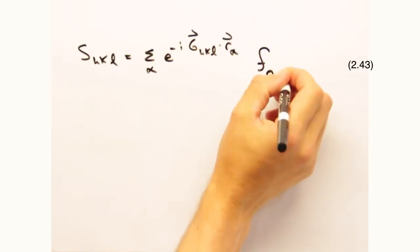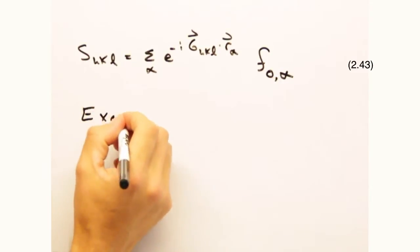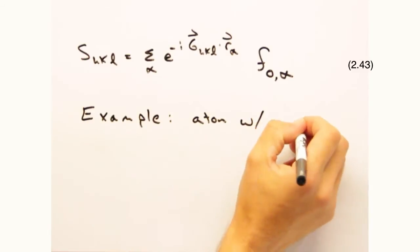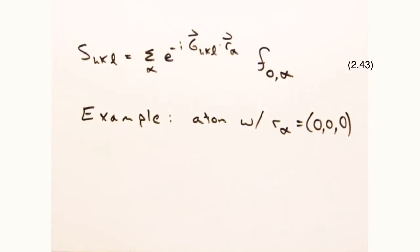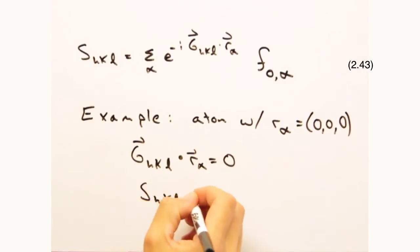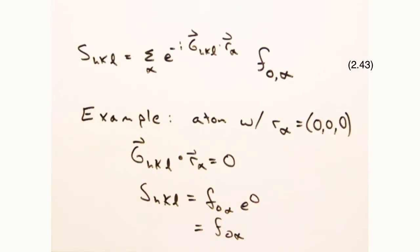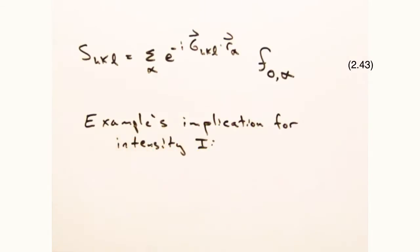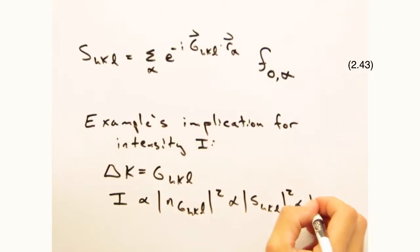Okay, so what would the structure factor look like in a simple cubic system? The basis for this case would just be one atom at r alpha equals zero, zero, zero. G sub hkl dot r alpha would always be zero, so the structure factor would be f0 for any hkl. So for every situation where delta k equals g, we have an intensity simply determined by the atomic form factor f0.